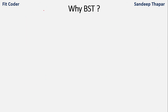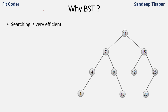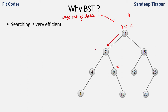Now let's understand the advantages of a binary search tree over a binary tree. Searching is very efficient in a BST. For example, to search for node 9: we compare 9 with root 11 — 9 is less than 11 so we go left. We compare with 7 — 9 is greater than 7 so we go right. We find 9. At each step we reduce our search space by half.